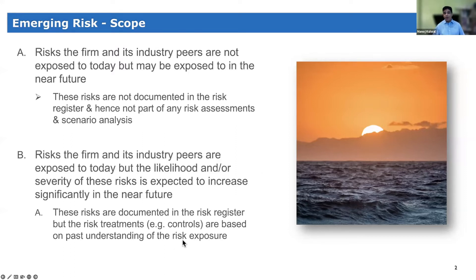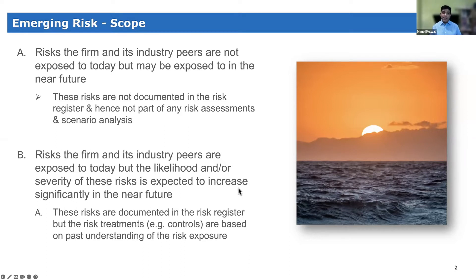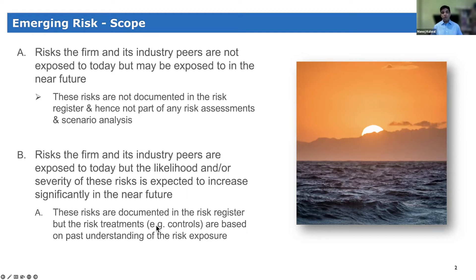The second category I'm classifying as emerging risk today is risks which you and your industry peers are already exposed to, but where something about those risks is changing significantly in the near future. Maybe the likelihood and severity of these risks today is low, but something is changing which may increase both. That's why you need to keep an eye on them, because your current controls are based on past understanding. If the profile or context of that risk is changing, you need to adjust your controls to align with that changing risk profile.